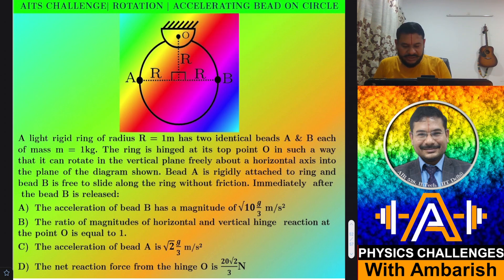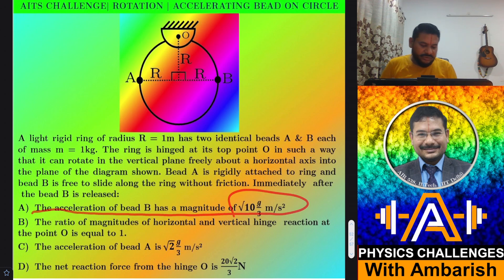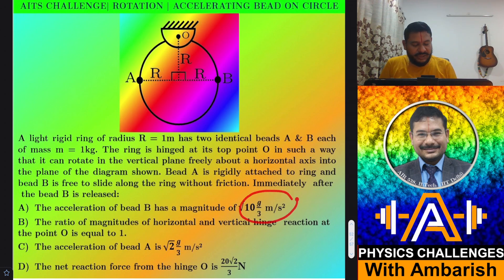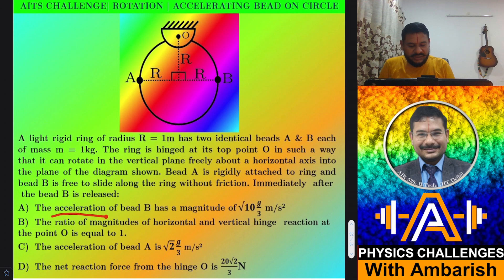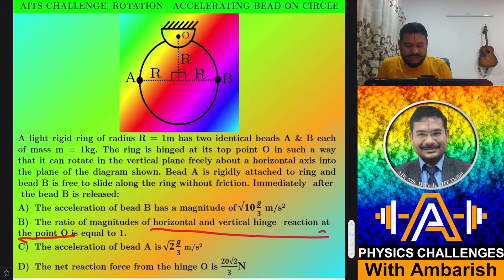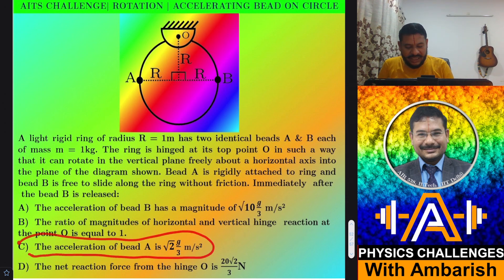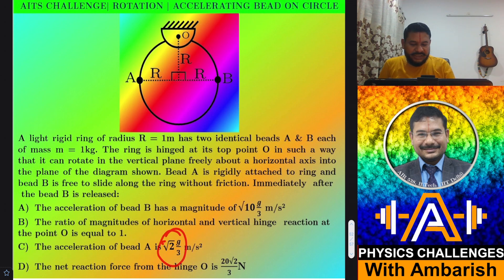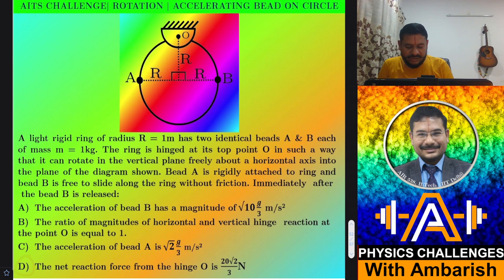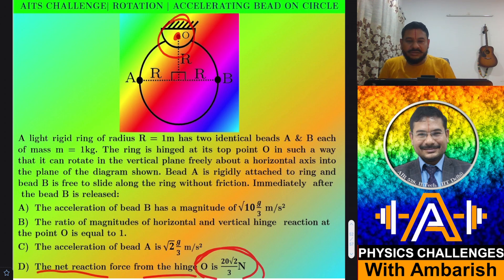The first option is the acceleration of bead B has magnitude root 10 G by 3 meters per second squared. The second option is the ratio of magnitudes of horizontal and vertical hinge reactions at point O is equal to 1. Option C is the acceleration of bead A is root 2G by 3. And option D is that the net reaction force from the hinge O is a specific value. Immediately after release we have to find the hinge reaction.